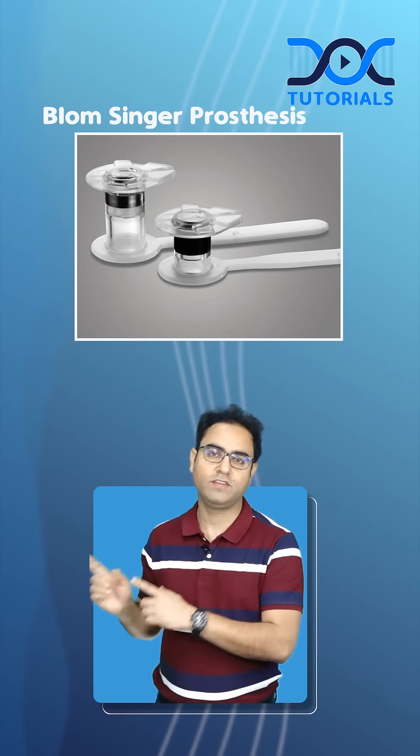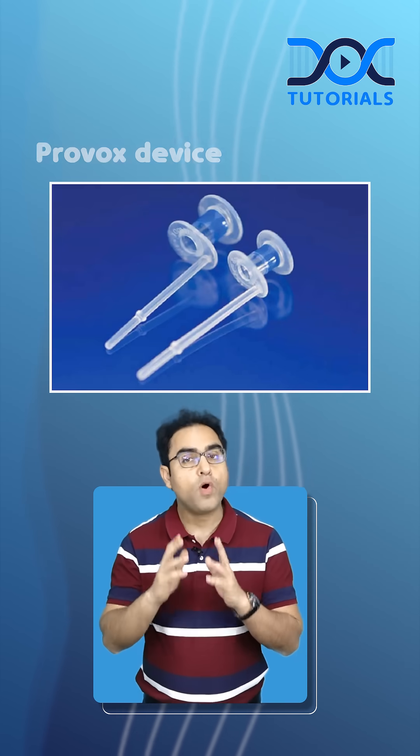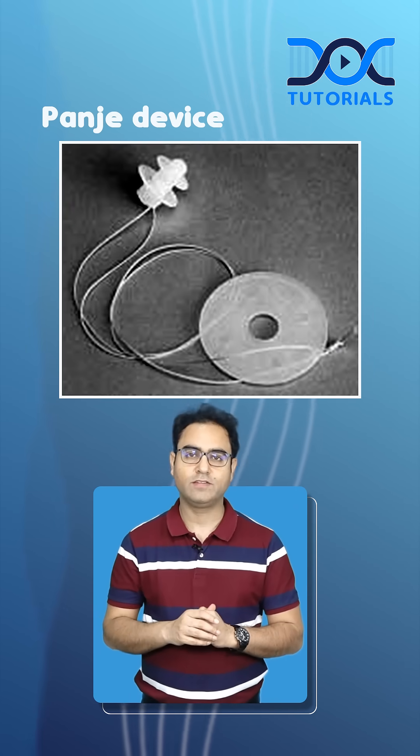What are the various examples of TEP devices? Number one is the Blom-Singer prosthesis. Number two is the Provox device. Number three is the Pangea device.